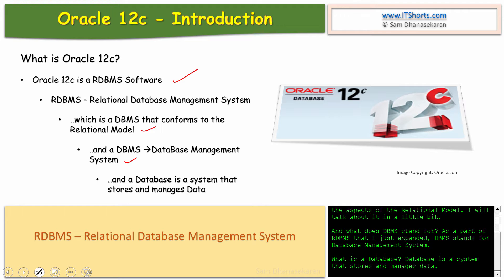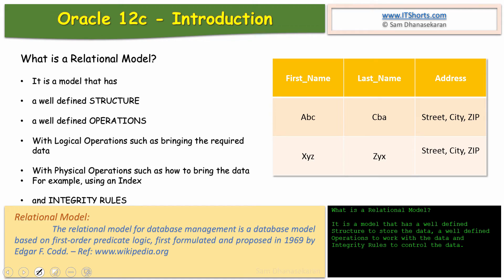What is a database? A database is a system that stores and manages data. So what's a relational model? It's a model that has well-defined structure to store the data, well-defined operations to work with the data, and integrity rules to control the data.